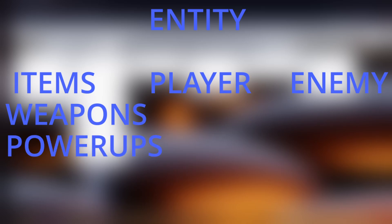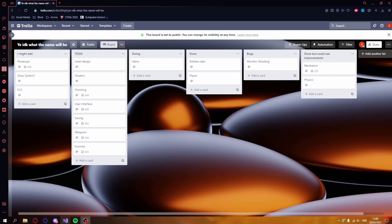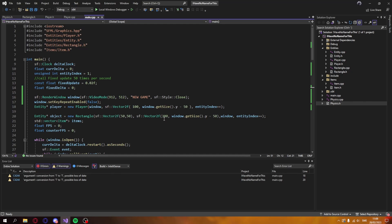Other things derived from entities include the player, bullets, and enemies — and from the enemies class there will be different types of enemies. So everything is connected through the entities class, which will have some virtual functions and shared variables that all entities will use.